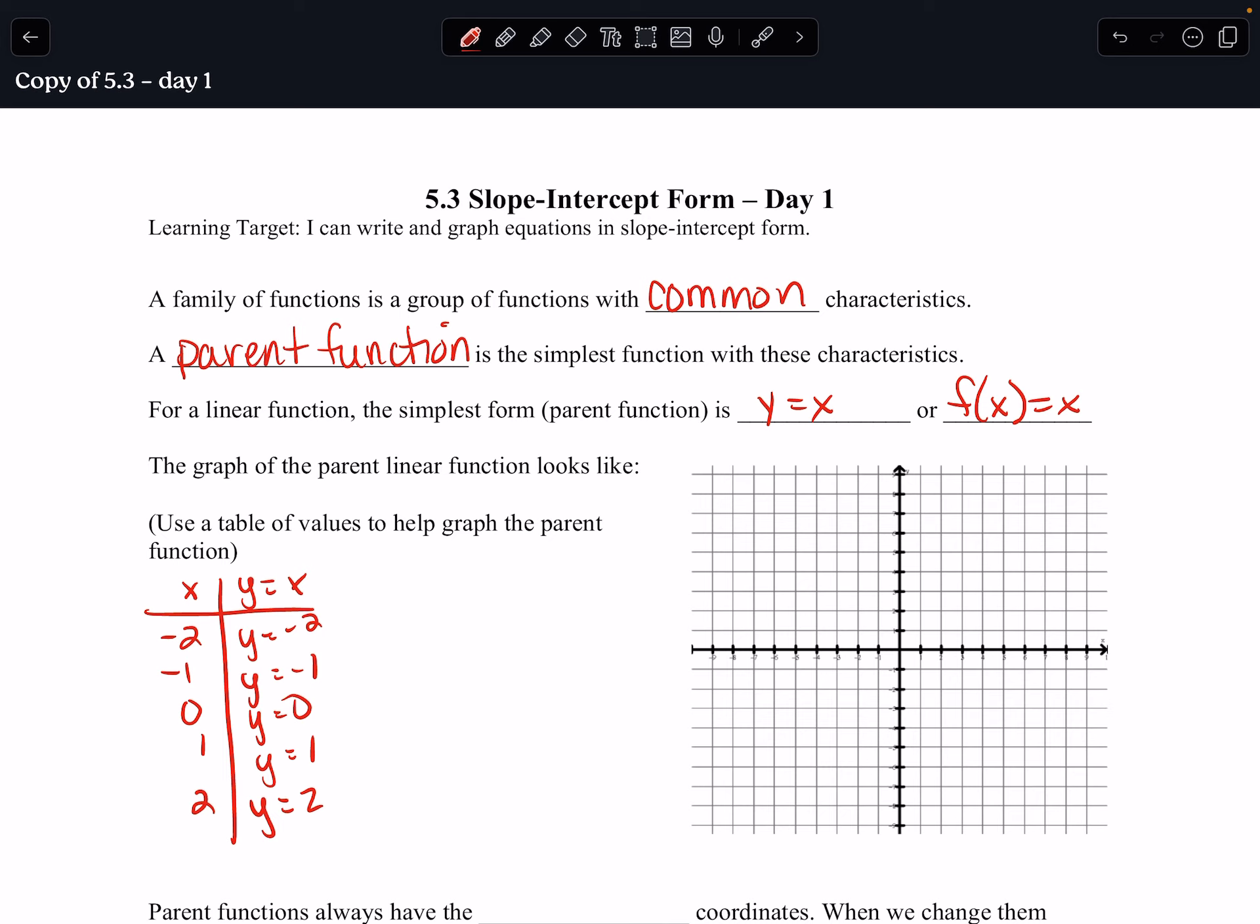I want you to notice that I chose to do negative 2, negative 1, 0, 1, 2 on purpose. So if I plot these points, it's going to be like so.